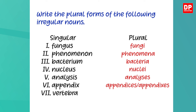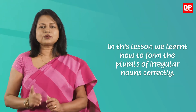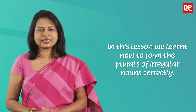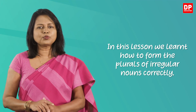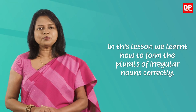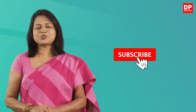The last word is vertebra. To form the plural, it's like formula — you replace -a with -ae. So the plural form is vertebrae, spelled v-e-r-t-e-b-r-a-e. I hope you could find the plurals correctly. That marks the end of today's lesson. In this lesson, we learned how to form the plurals of irregular nouns correctly. We will learn more about irregular plurals in another lesson. Please subscribe to our channel. Goodbye.